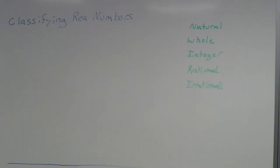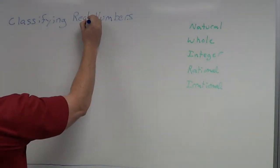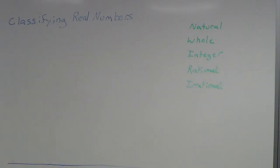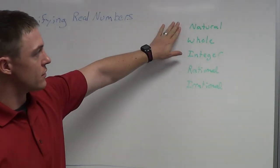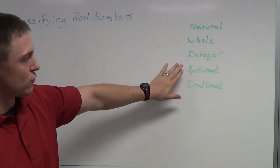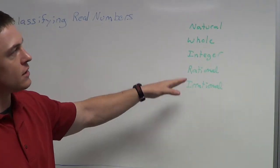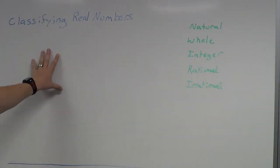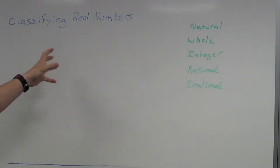In this video we're going to talk about classifying real numbers. I'm just going to do examples, because going over a video of just the meaning of the words doesn't make a whole lot of sense unless you actually apply it to a few numbers. So I have the five classifications here: natural numbers, whole numbers, integers, rational and irrational numbers. I'm going to write a couple of examples up on the board and we're going to classify them.